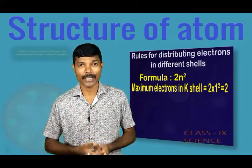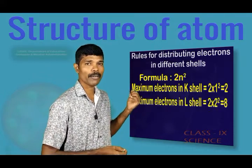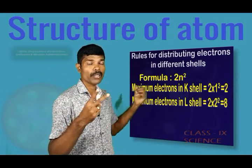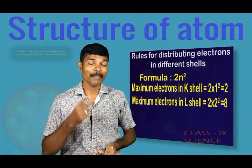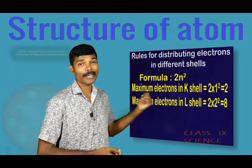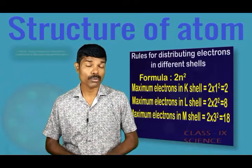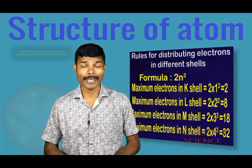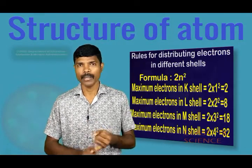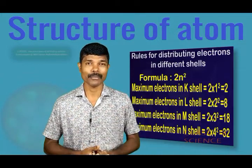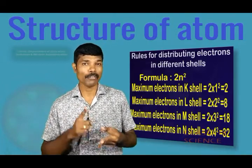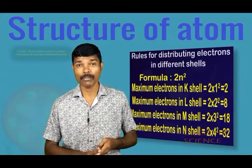If we distribute electrons in the second shell, using the same formula 2n² with n = 2: 2 × 2² = 2 × 4 = 8. So the maximum number of electrons in the second shell is 8. In case of the third shell it will be 18 electrons, and in case of the fourth shell it will be 32 electrons. So K shell will have maximum 2 electrons, L shell maximum 8, M shell maximum 18, and N shell maximum 32 electrons.